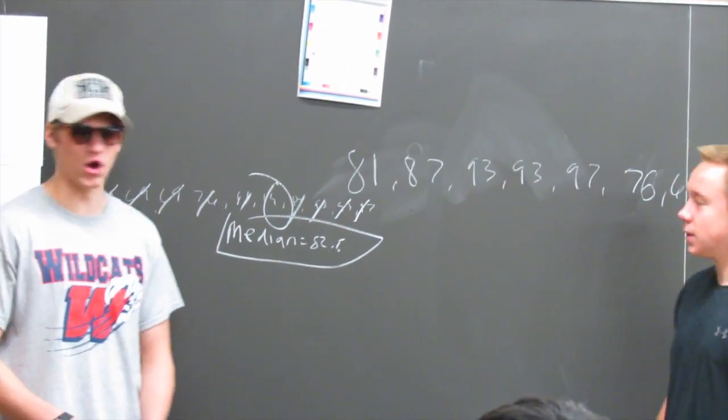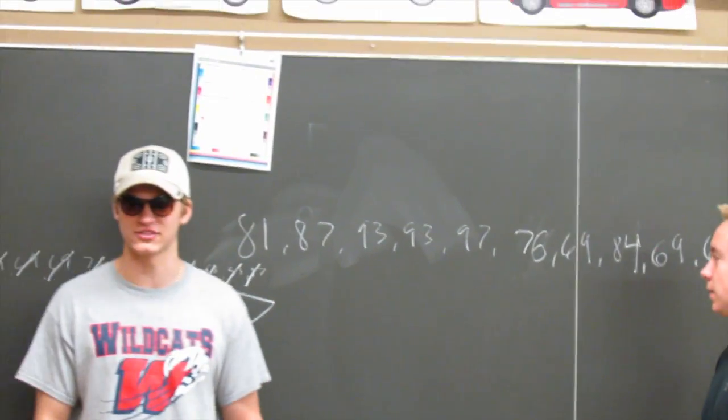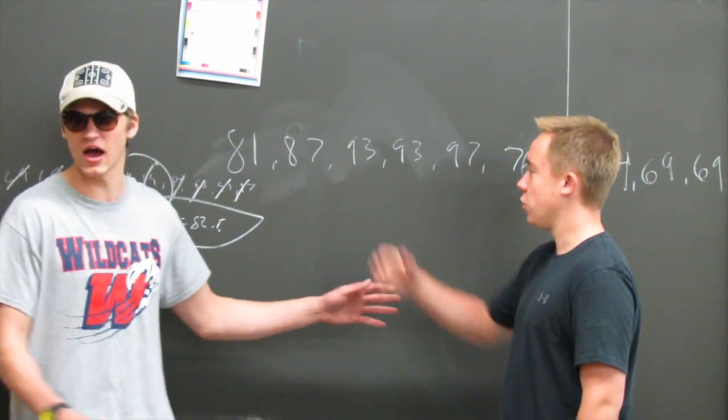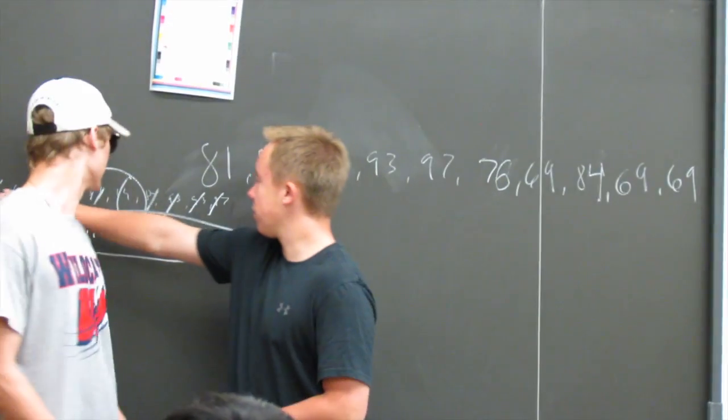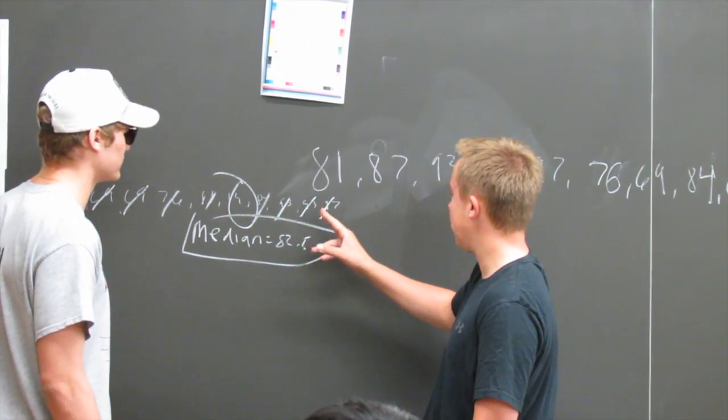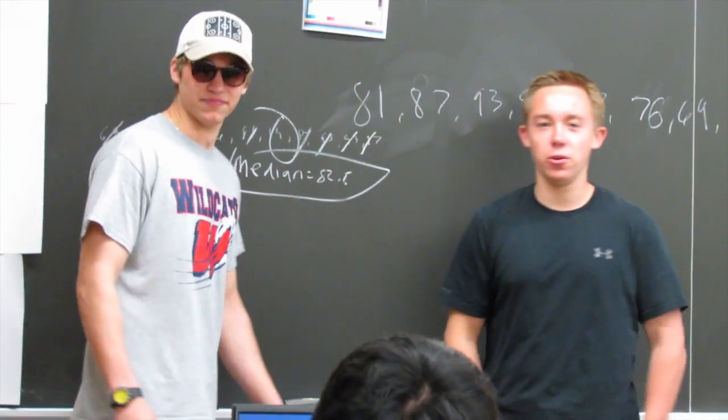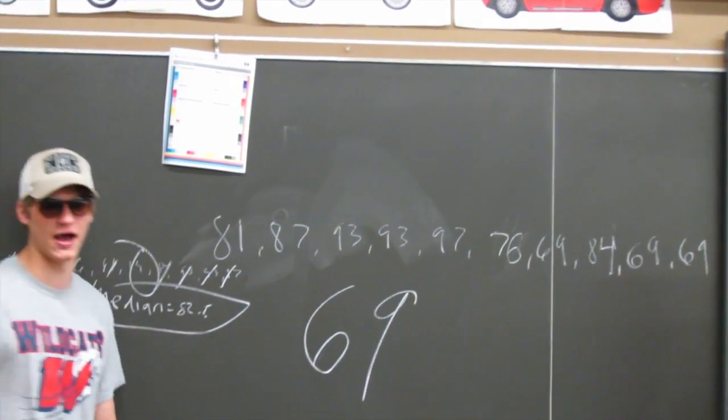How do you find the mode? The mode is the most often occurring number in the data set. So what would the mode be here? 69. There's 69 three times. 76 once, 81 once, 84 once, 87 once, 93 twice, 97 once. 69 is the mode. That's the mode.